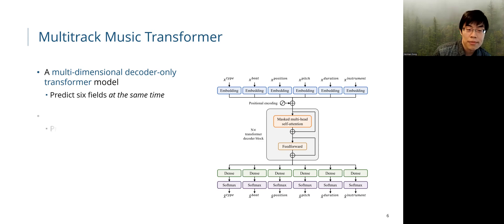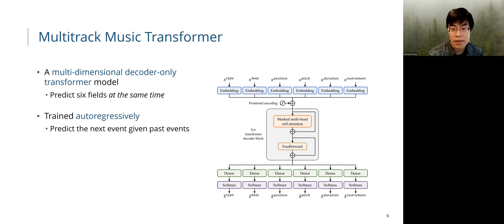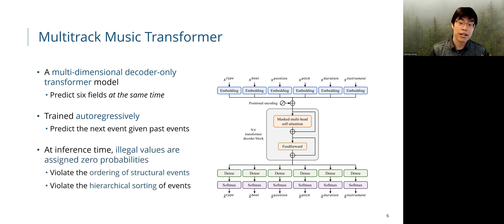Like a typical transformer model, the model is trained auto-regressively. Moreover, at inference time, we assign zero probabilities to illegal values in the sampling function, so that the generated representation is always valid.